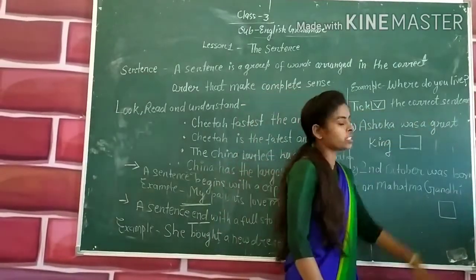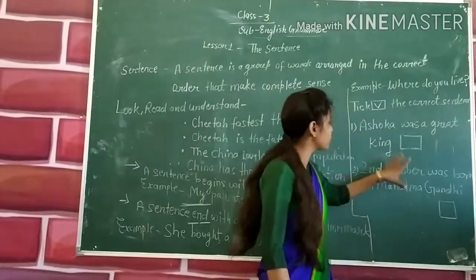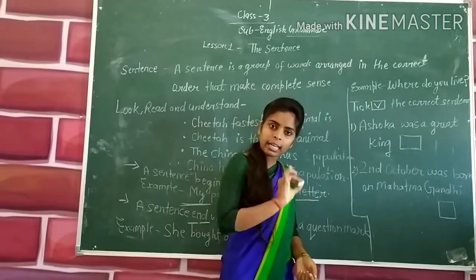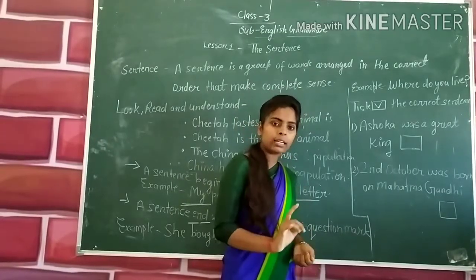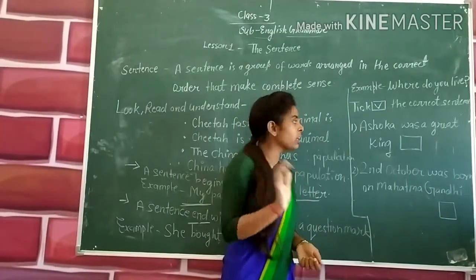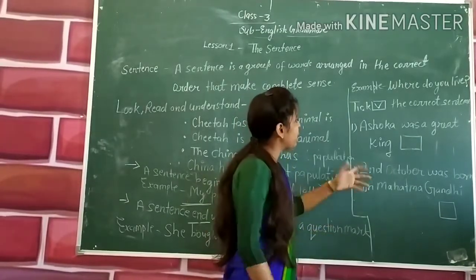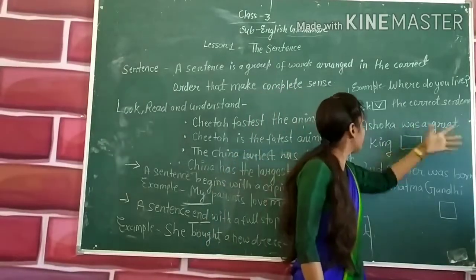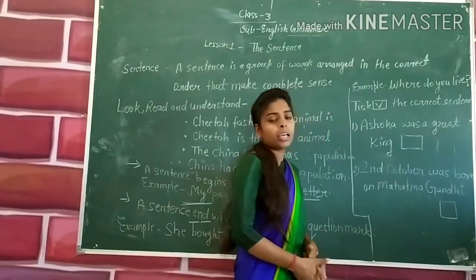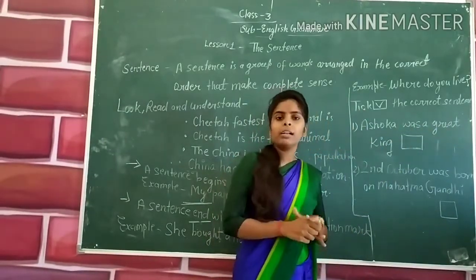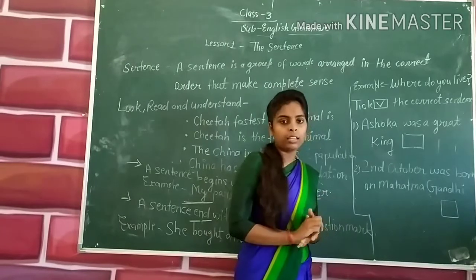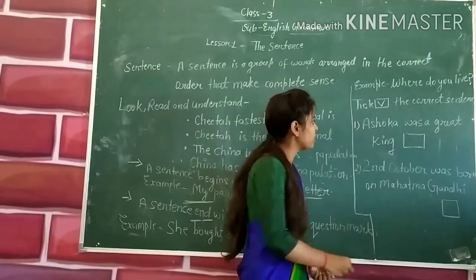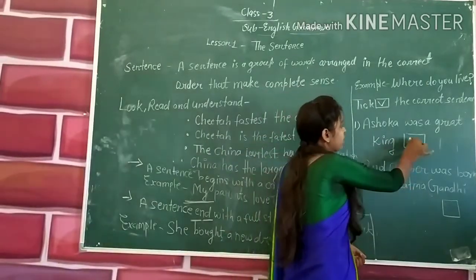What is a correct sentence or an incorrect sentence? Let's say: 'Ashoka was a great king.' Ashoka was a great king — this is the right sentence. And this is correct.